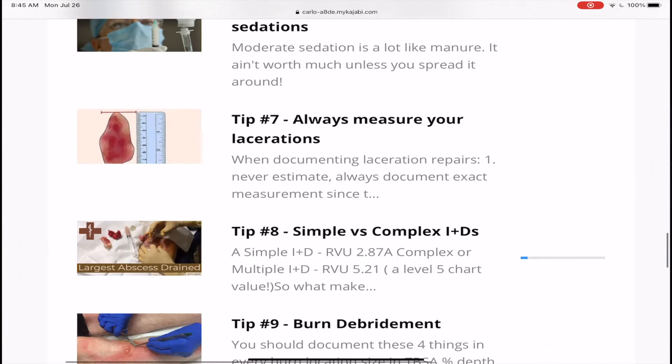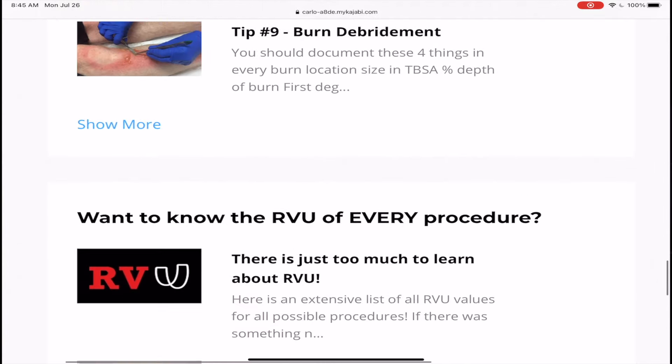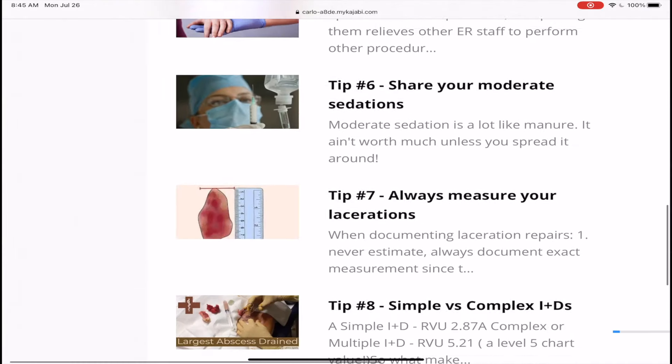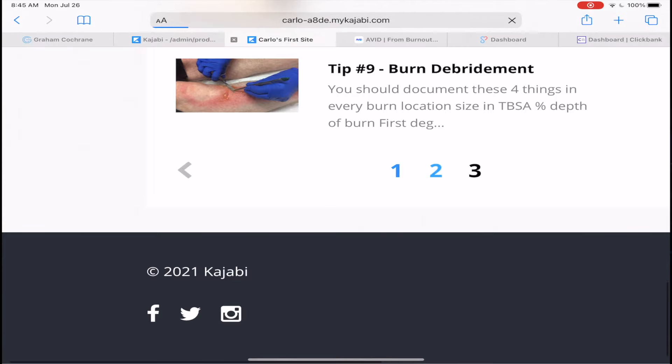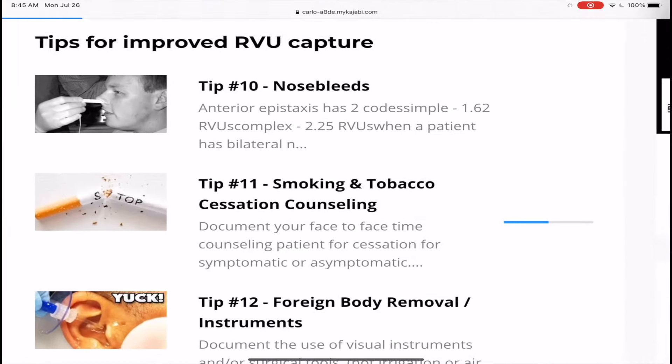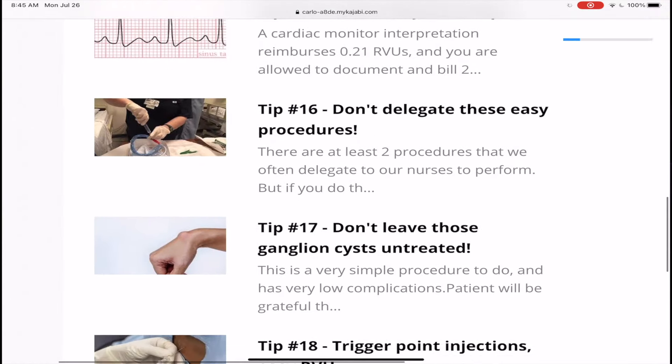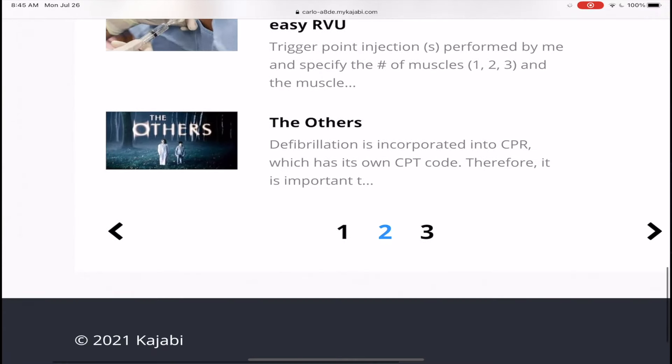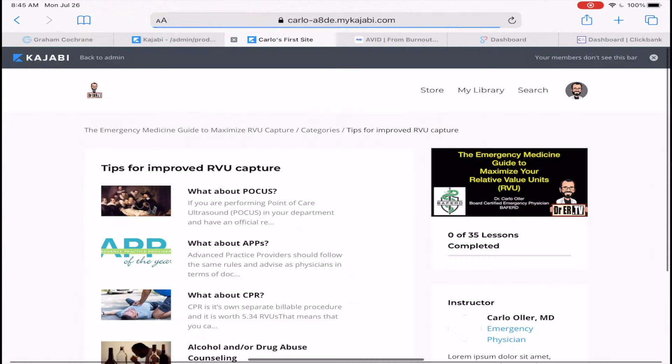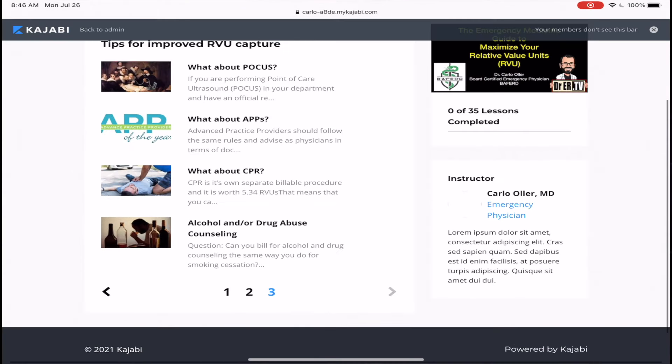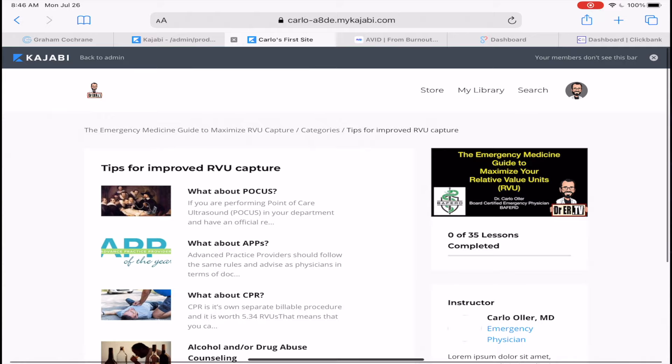What procedures and what needs to be documented on procedures to bill completely for it? What words you need so that you can bill for complex I&D repair, complex nasal packing or epistaxis treatment? What kind of counseling do you need to do to add an extra 0.35 RVUs? What do you need to do to document EKGs or rhythm strips to increase your RVU coding and billing?